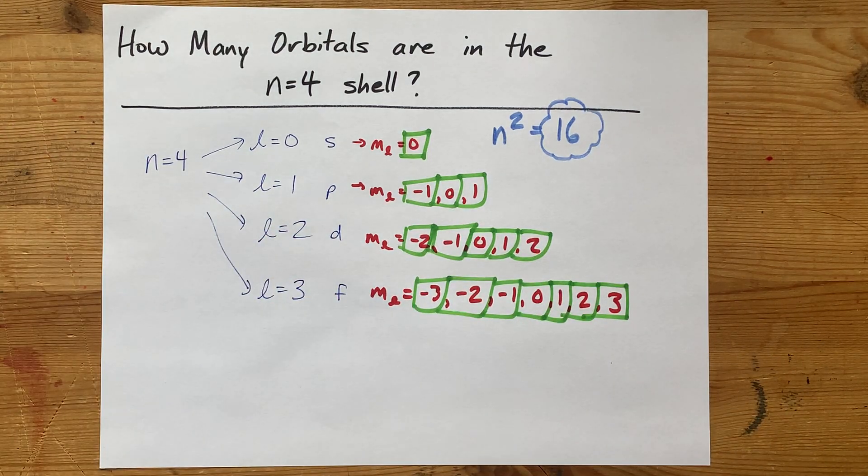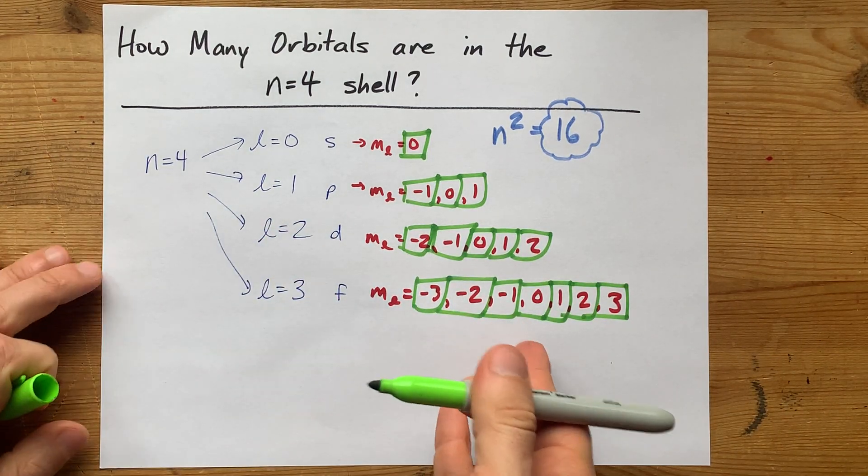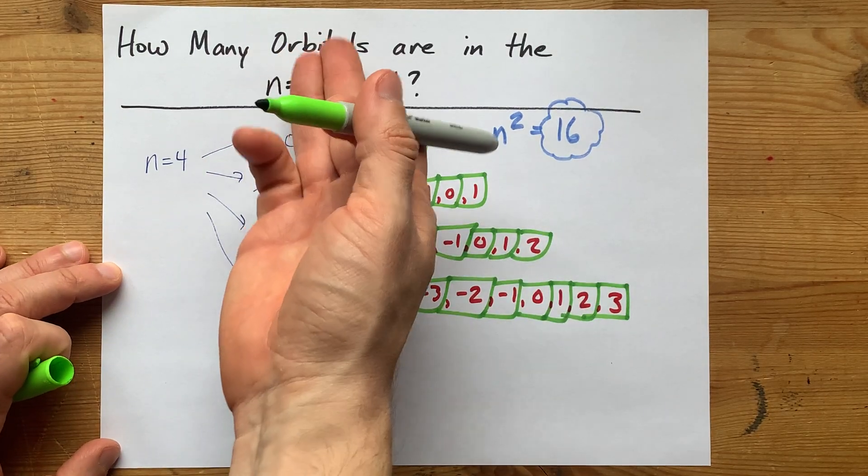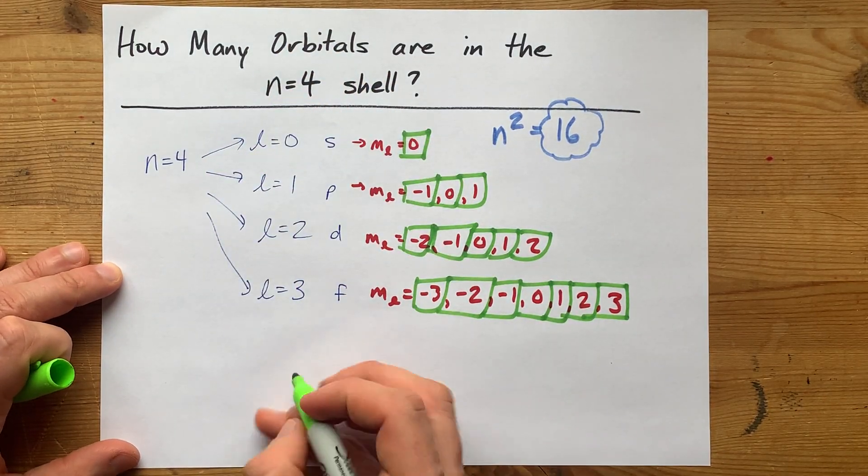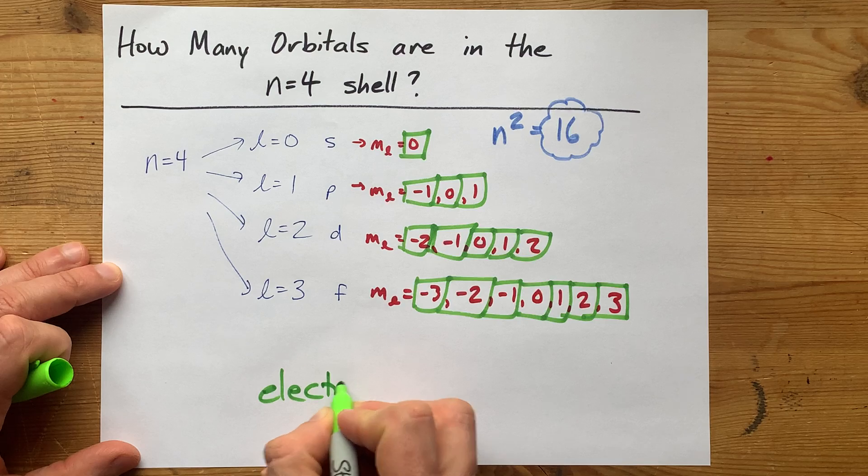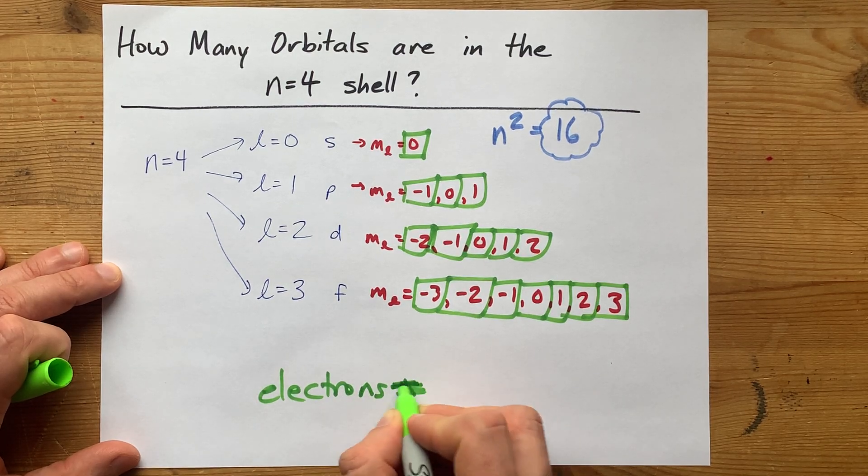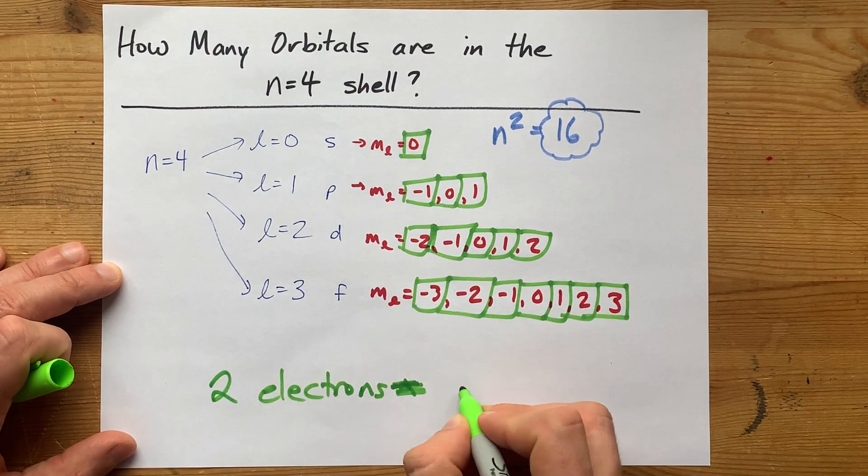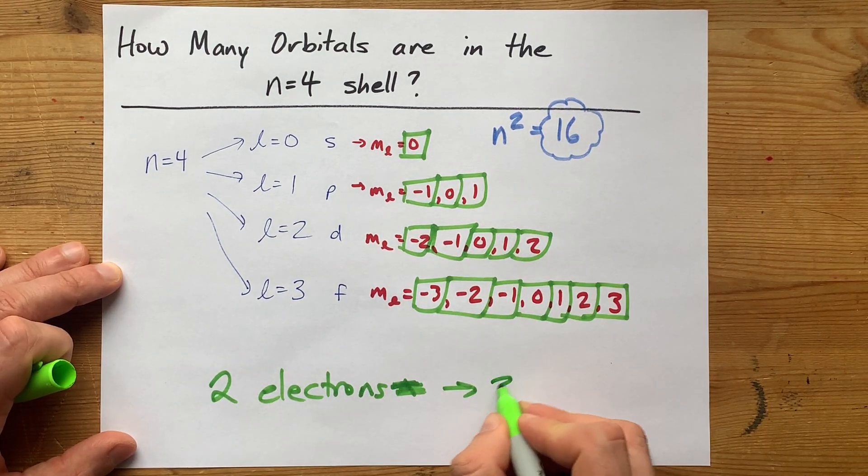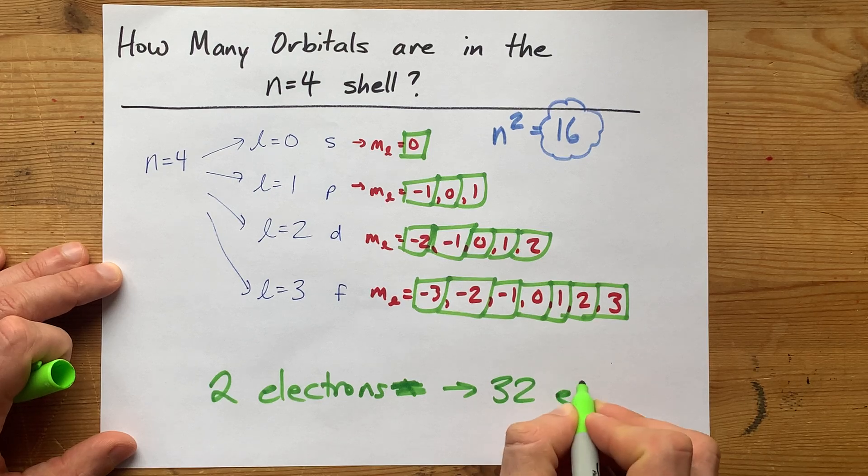16 orbitals, just like I told you. Maybe you've been asked how many electrons you can fit in there. Well, each of the orbitals themselves hold 2 electrons. And so, 16 orbitals in total can hold 32 electrons.